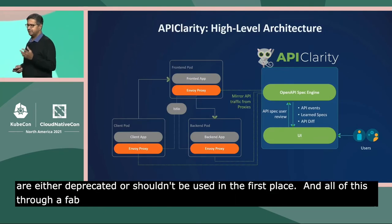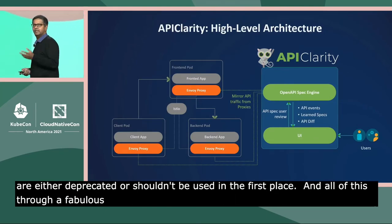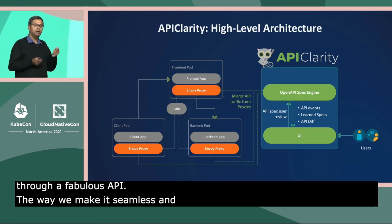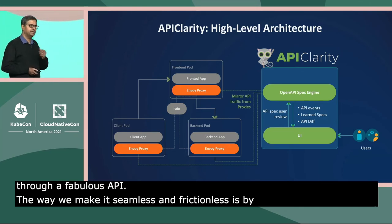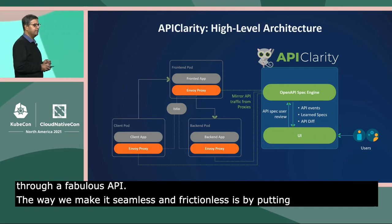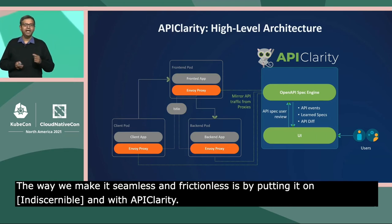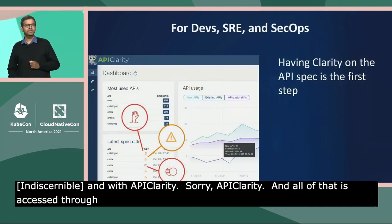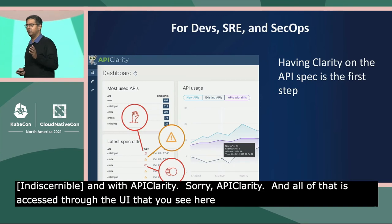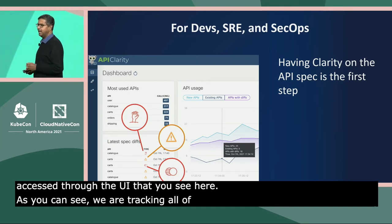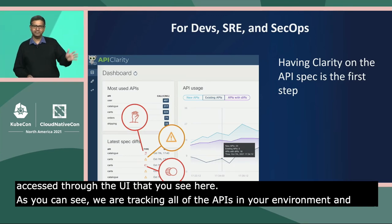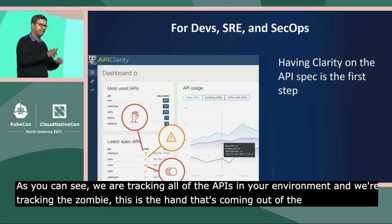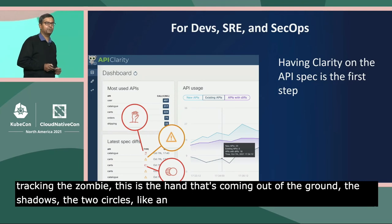The way we make it seamless and frictionless is by putting a WASM filter in Envoy and then mirroring all of the API traffic to the API spec engine within API Clarity. And all of that is accessed through the UI. As you can see, we are tracking all of the APIs in your environment and we are tracking the zombies — the hand coming out of the ground — the shadows — two circles like an eclipse — and the drifts, which are the exclamation points.